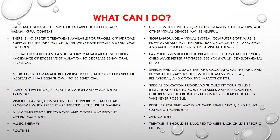What can we do? Here are some interventions for kids with Fragile X that will help with pragmatics and delayed language production and comprehension. We can provide early intervention and special education vocational training — these are key aspects that should begin as soon as they are diagnosed. Speech and language therapy, occupational therapy, and physical therapy may be necessary to help with many physical, behavioral, and cognitive impacts of Fragile X Syndrome. We must increase linguistic competencies embedded within socially meaningful contexts.